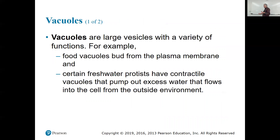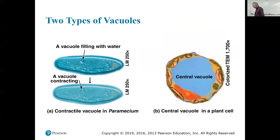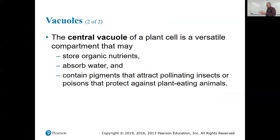Vacuoles are large vesicles that have a variety of functions. Food vacuoles bud from the plasma membrane, and certain freshwater protists have contractile vacuoles that swell up with water and push water out. There's a central vacuole in a plant cell that probably contains food, and the central vacuole of a plant cell stores organic nutrients, absorbs water, contains pigments that attract pollinating insects, and poisons that protect against plant-eating animals.